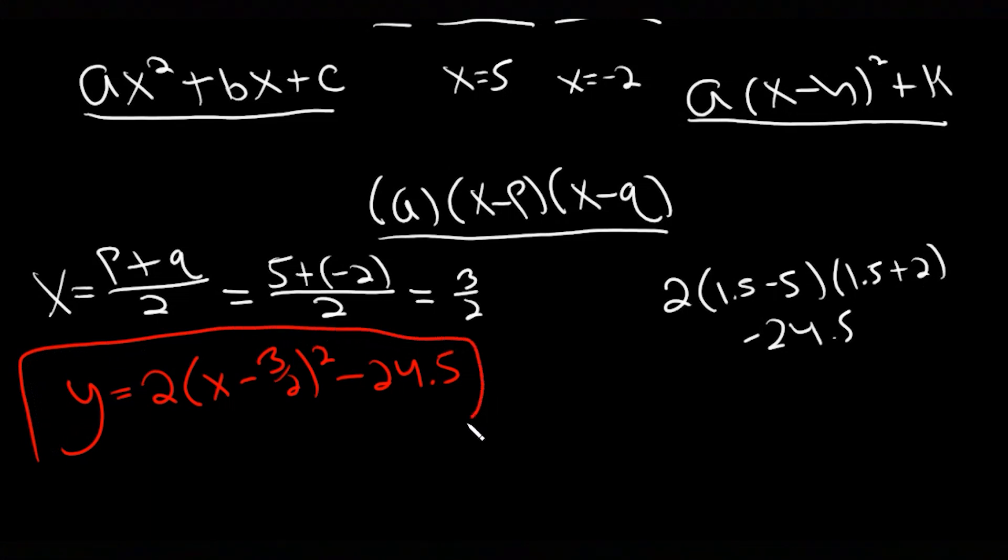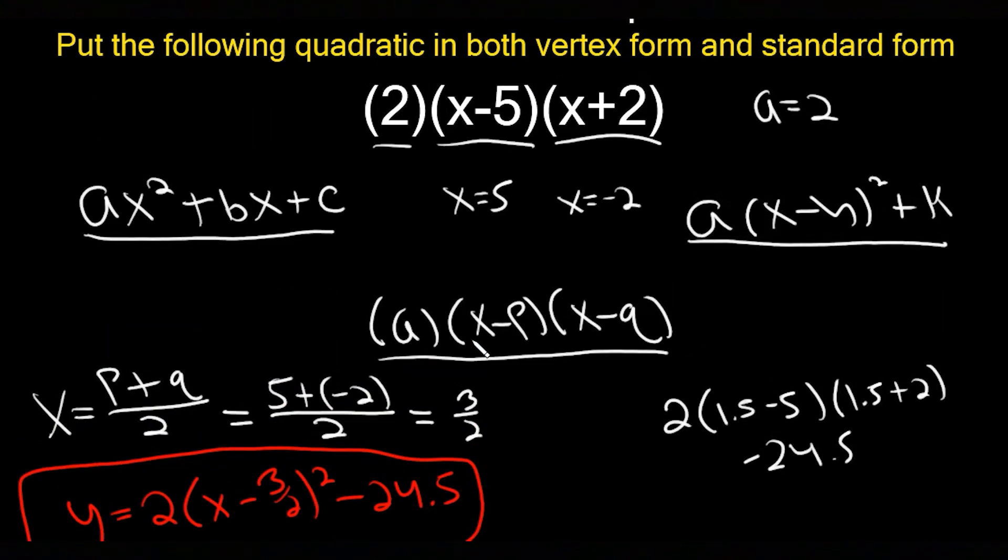From here we want to put it in standard form. There's a couple different ways you could do it. You could expand out vertex form, or you could just multiply out intercept form. That's probably going to be easier. I'm just going to multiply this out and that will give me standard form.